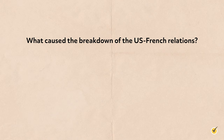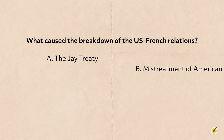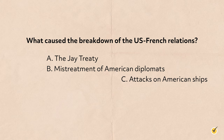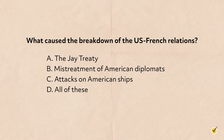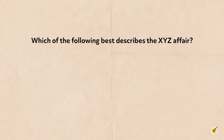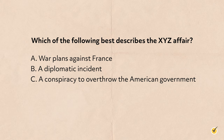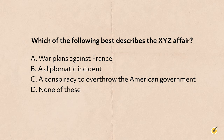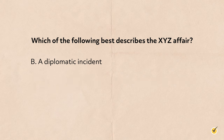Let's look at a couple of review questions. Number one: what caused the breakdown of U.S.-French relations? A, the Jay Treaty; B, mistreatment of American diplomats; C, attacks on American ships; or D, all of these? The correct answer is D. Number two: which of the following best describes the XYZ affair? A, war plans against France; B, a diplomatic incident; C, a conspiracy to overthrow the American government; or D, none of these? The correct answer is B. The XYZ affair was a diplomatic incident between the U.S. and France that resulted in the Quasi-War. That's all for this review. Thanks for watching, and happy studying.